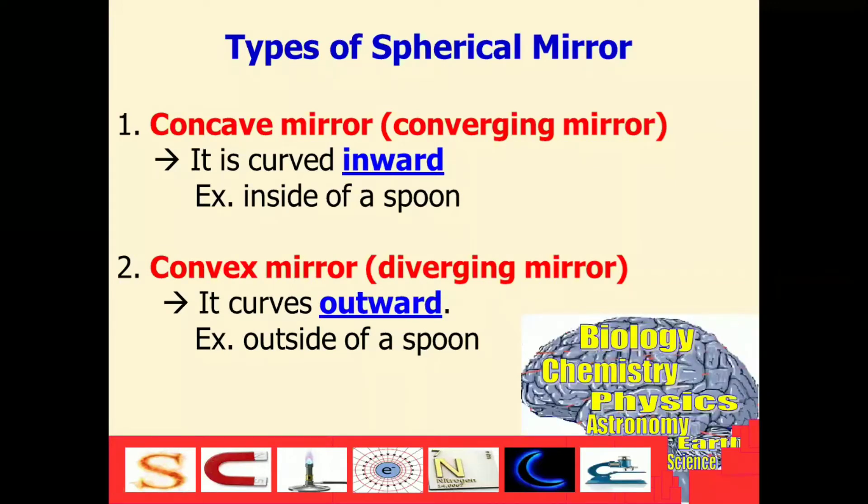For us to know the characteristics of the images formed by concave and convex mirrors, we have to familiarize ourselves first with the terminologies that we will encounter when we draw the ray diagram. These are the terminologies that we have to remember.